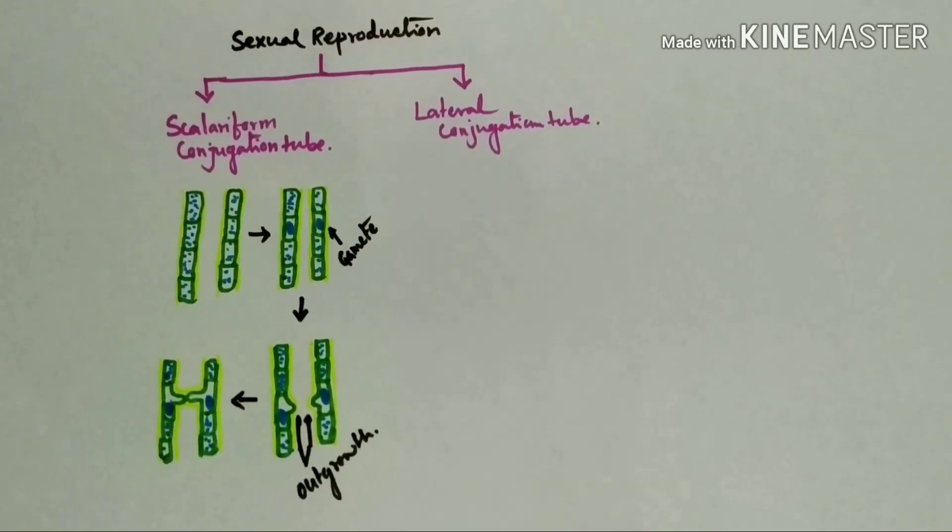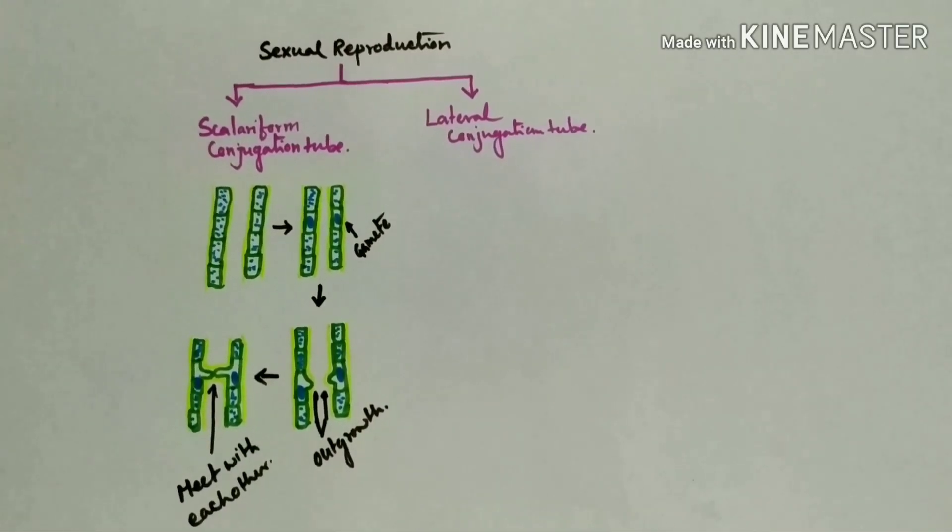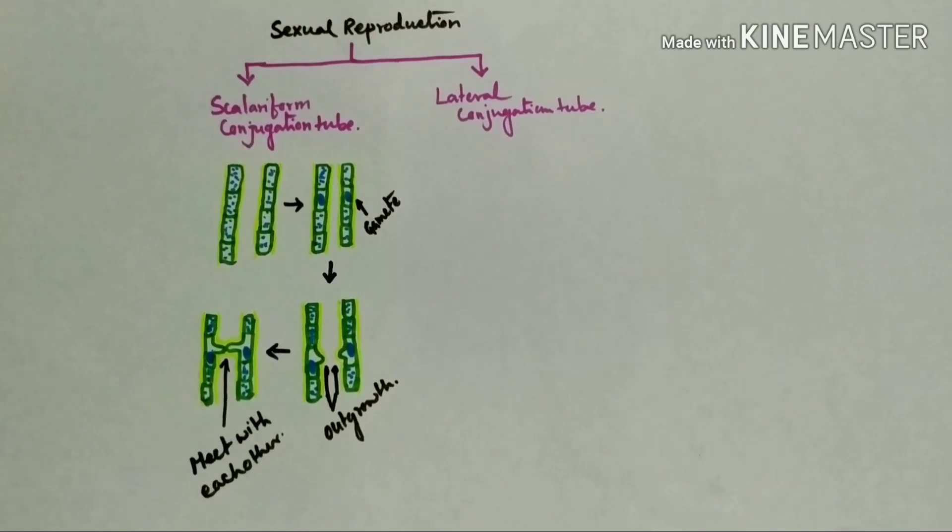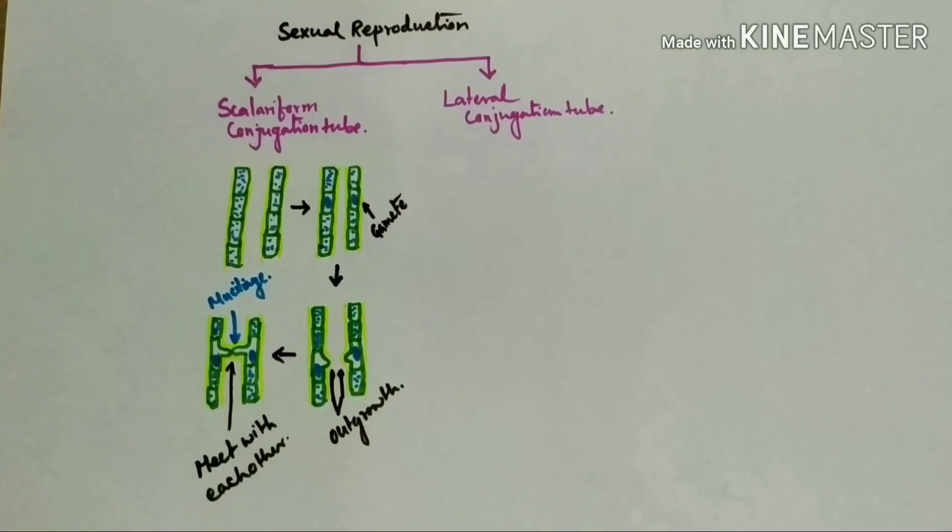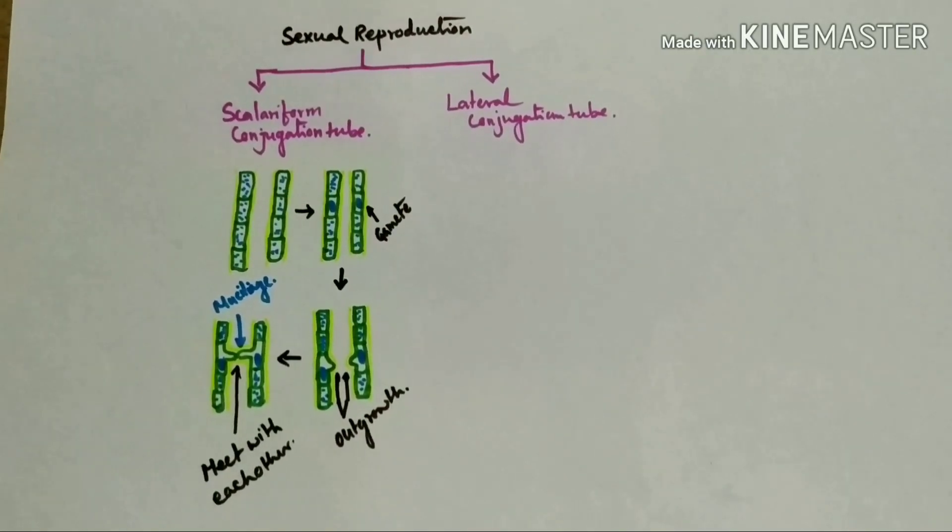Now, small outgrowth produces from each filament, then outgrowth enlarges in size and meets with each other. Both filaments at that portion are covered by a conjugation tube.